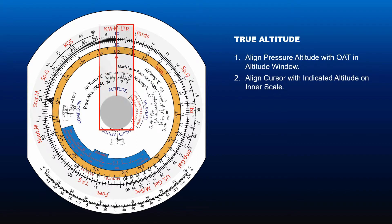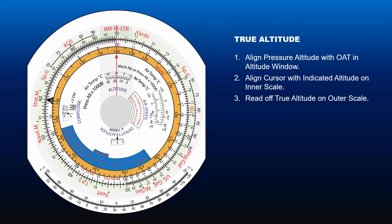Next, rotate the cursor so that it is aligned with the indicated altitude on the inner scale. Then, read off the true altitude on the outer scale.